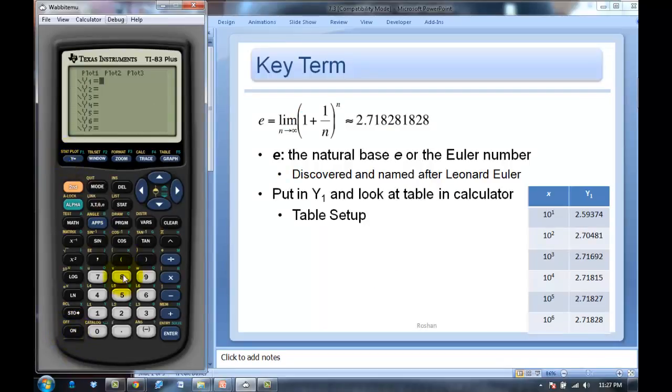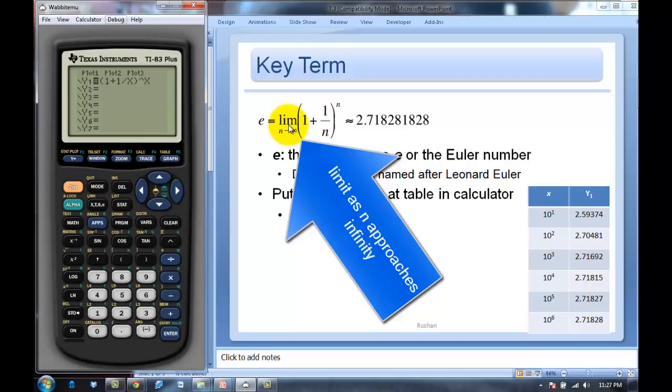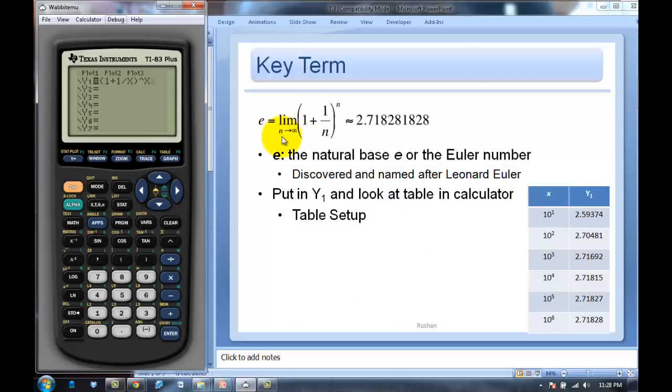In Y1, please put in (1 + 1/x)^x. E equals the limit as n approaches infinity. What am I trying to say there? What I'm trying to say is that as this n value, or in our case x, gets humongous, then this equation 1 + 1/x to the x power is going to approach this. Let's see if in fact that happens.